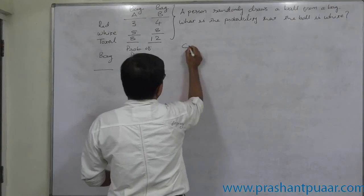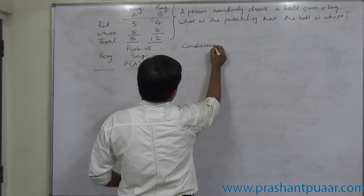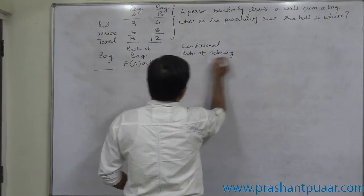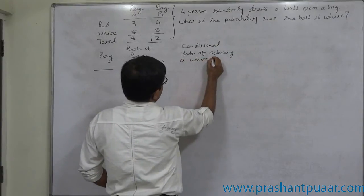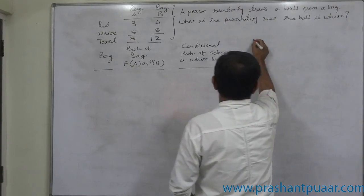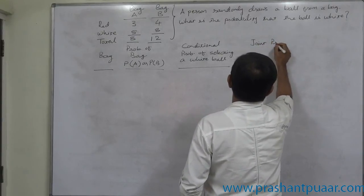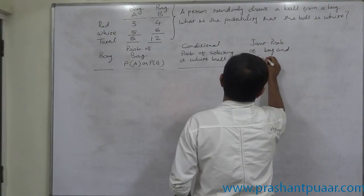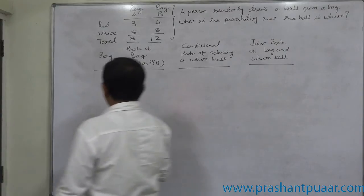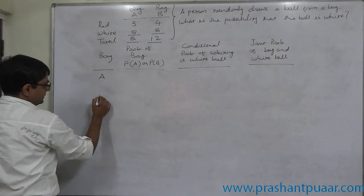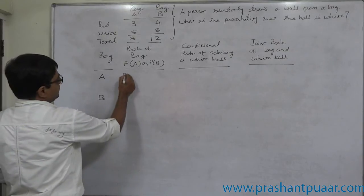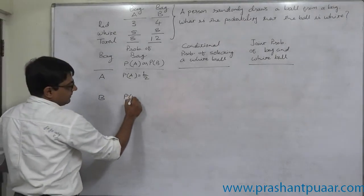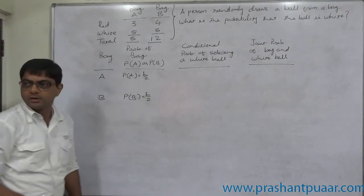The next column is the conditional probability of drawing a white ball, and the last column is the joint probability of the bag and white ball. The probability of selecting bag A is 1 by 2, and similarly the probability of selecting bag B is also 1 by 2, since both are selected out of 2 bags.